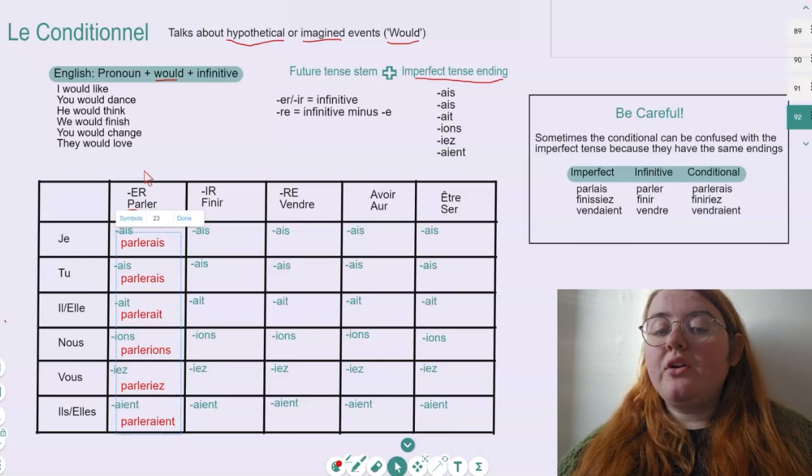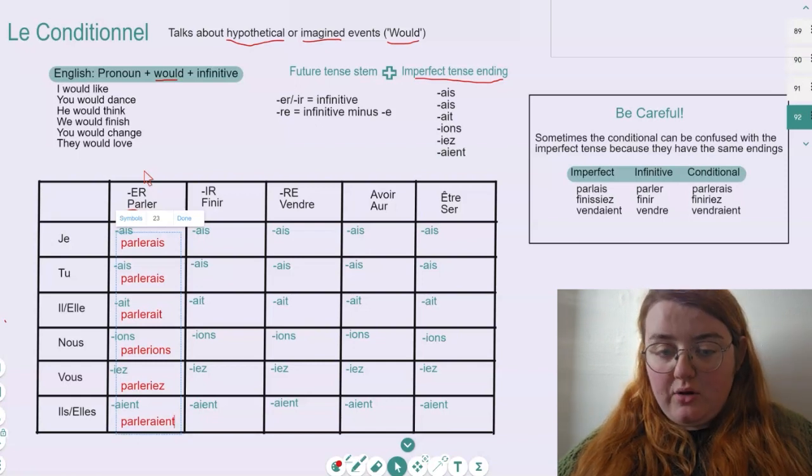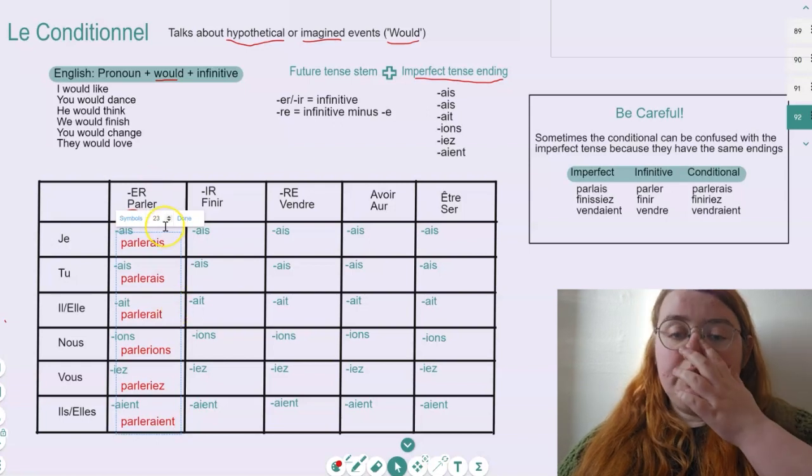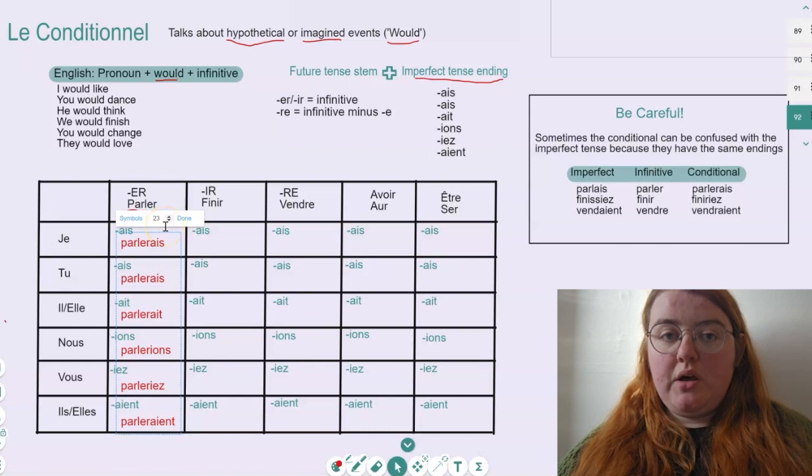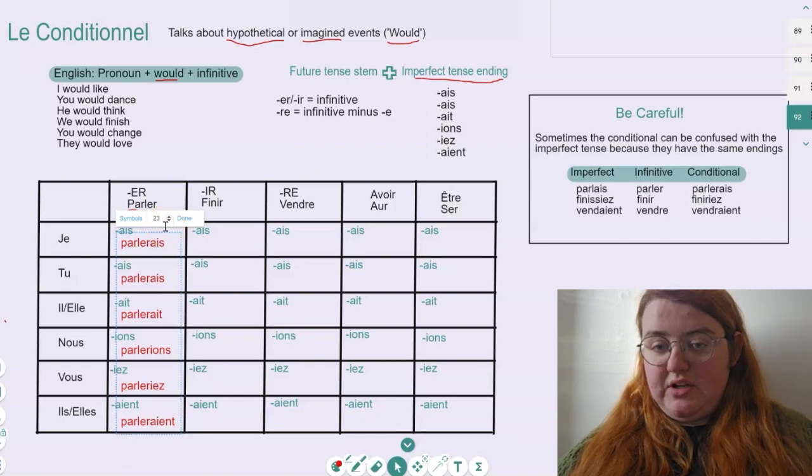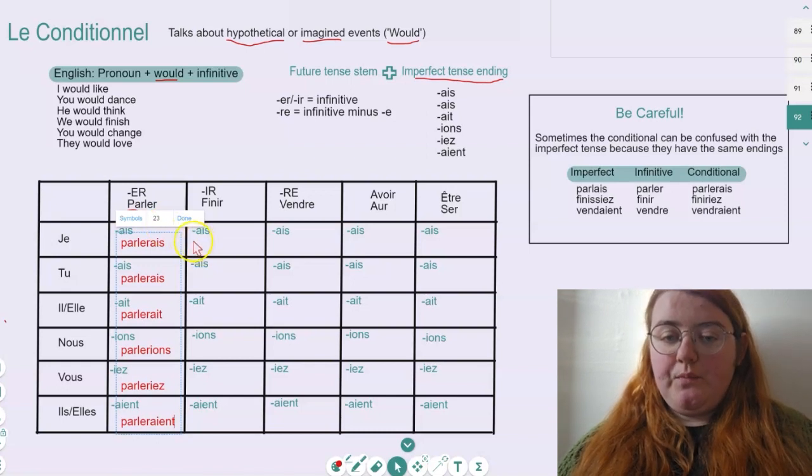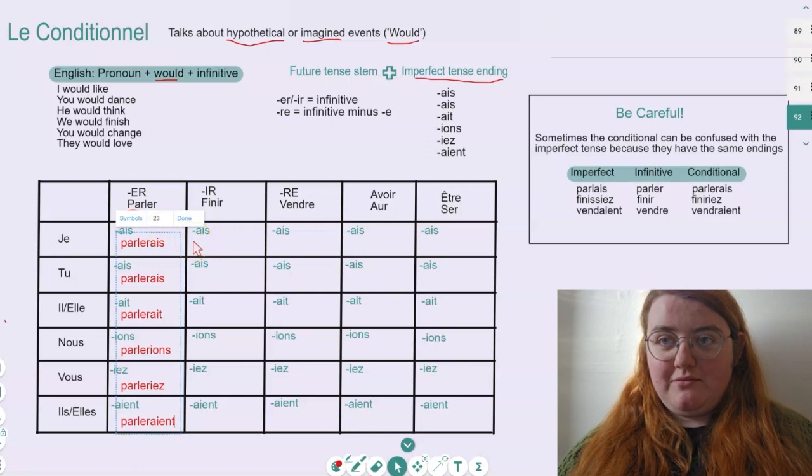Je parlerais, tu parlerais, il parlerait, nous parlerions, vous parleriez, ils ou elles parleraient. So as you can see with these ones, a lot of them sound very similar. Pronunciation very similar, whereas the spelling is the thing that changes it. So are we feeling confident so far? Amazing.